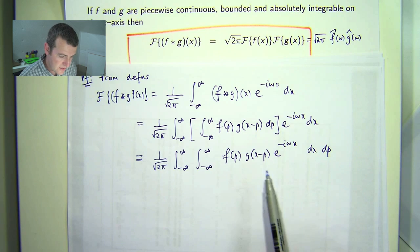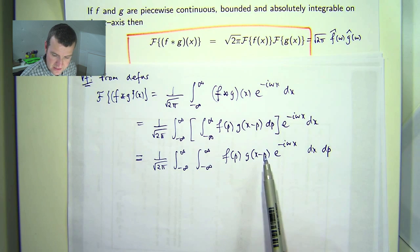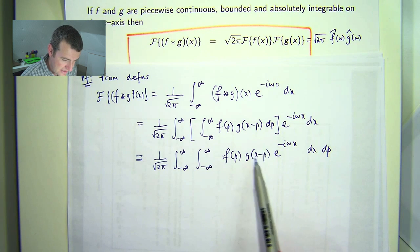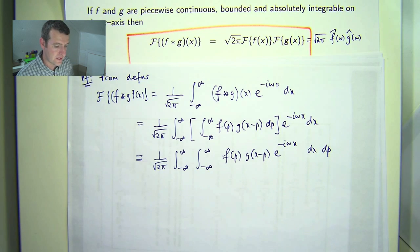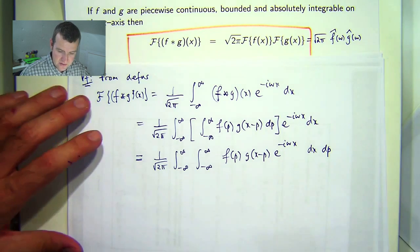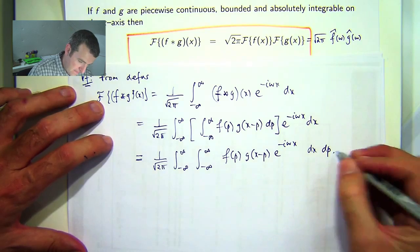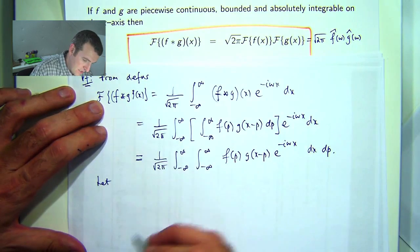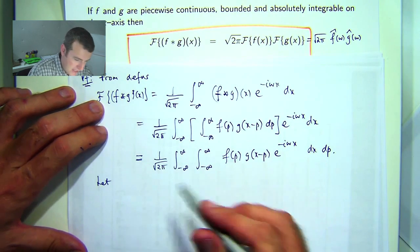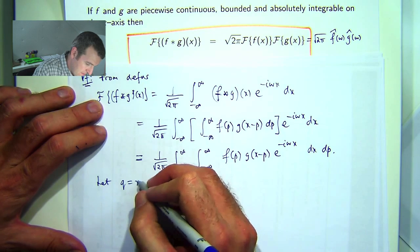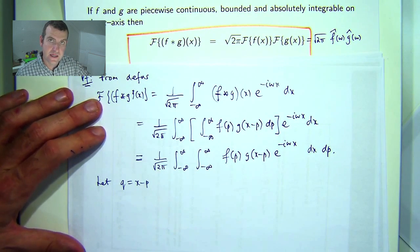Okay, so now what? Well, what we're going to do is make a substitution. We would like to get this back to some sort of just standard variable here instead of having a shift. So I'm going to let x minus p be a new variable, q.